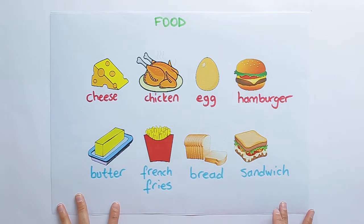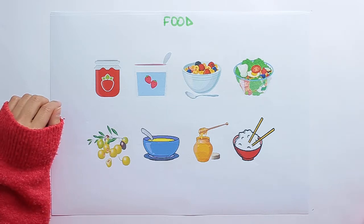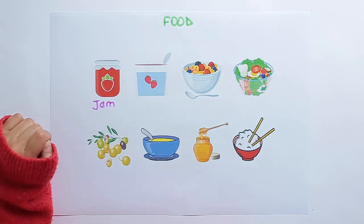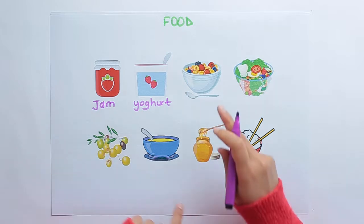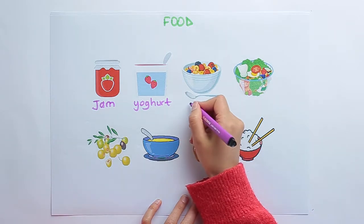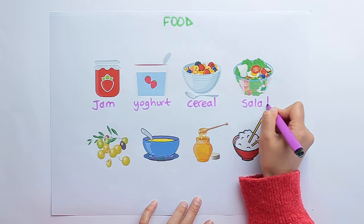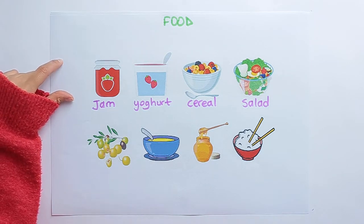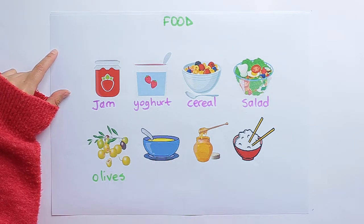And the last one — sandwich. Cheese, chicken, egg, hamburger, butter, french fries, bread, and sandwich. Let's go on. What is it? Jam. Next one — yogurt. What is it? Cereal.